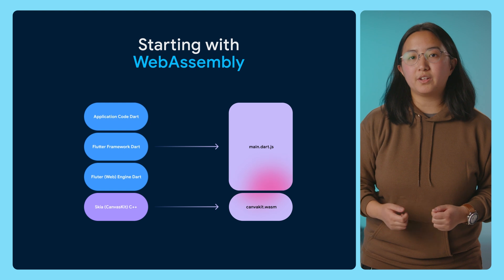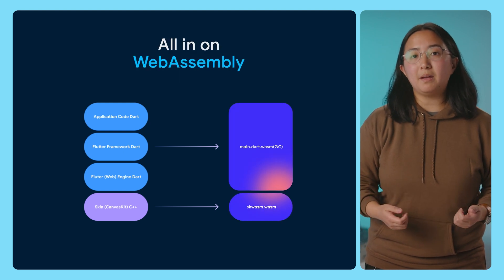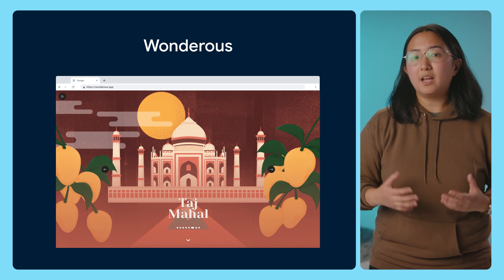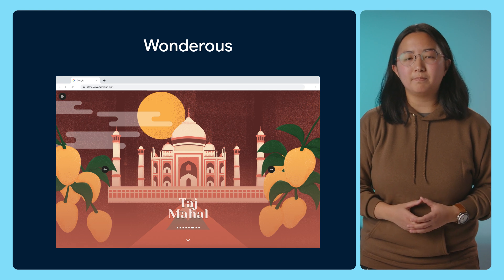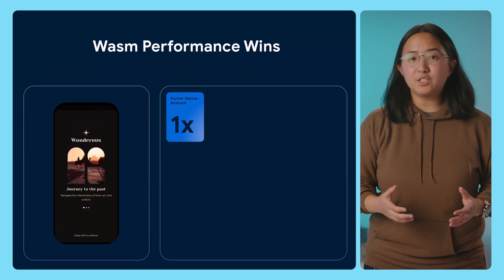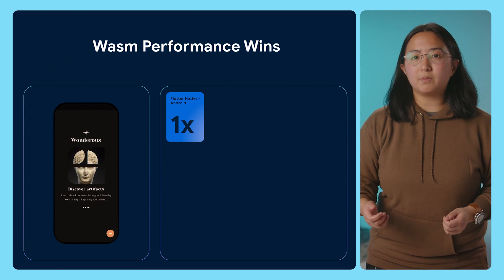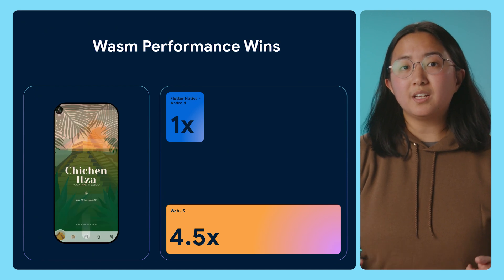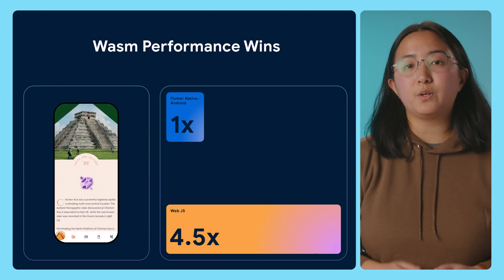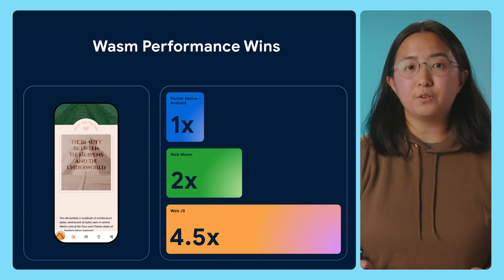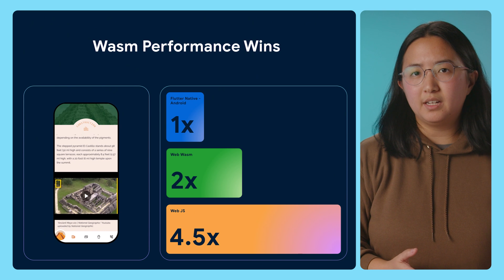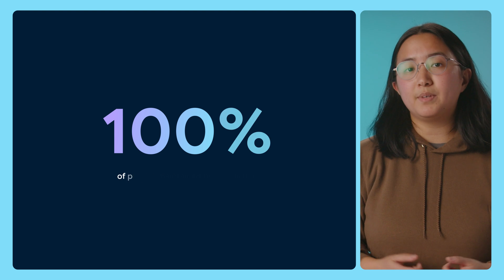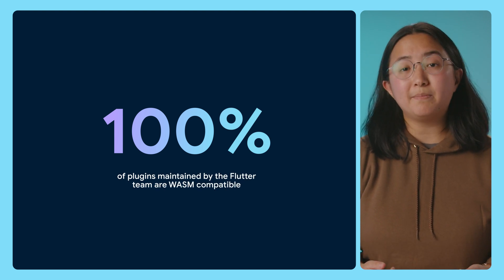Earlier this year, we announced that all code in a Flutter web app can now be compiled to WASM, making Flutter web apps faster than ever. As an experiment, we took the Wondrous app, which is built to demonstrate the richness and performance potential of Flutter on native devices, and ran it on the web. At the 95th percentile — how fast were the slowest frames? Compiling to JavaScript and running it in the browser was nearly five times slower. But compiling the app using WebAssembly cut the difference between web and native in half. As a result, we've stopped asking how much faster is WASM than JavaScript, and started asking how close can we get to native speeds. As of mid-2024, all plugins developed by the Flutter team are now WASM compatible.